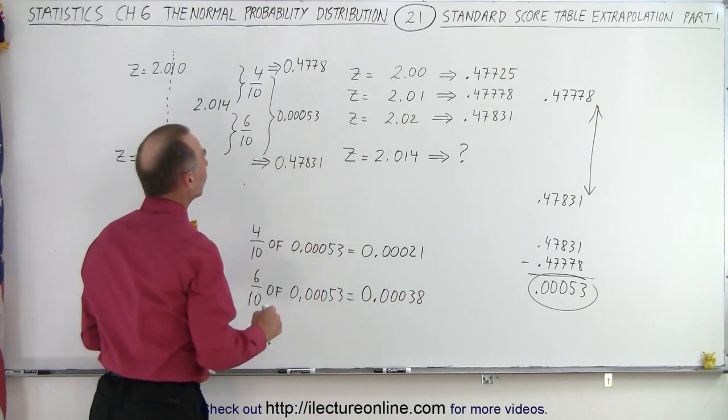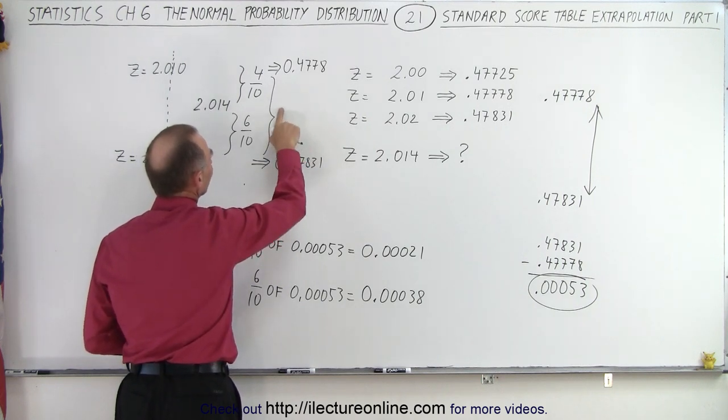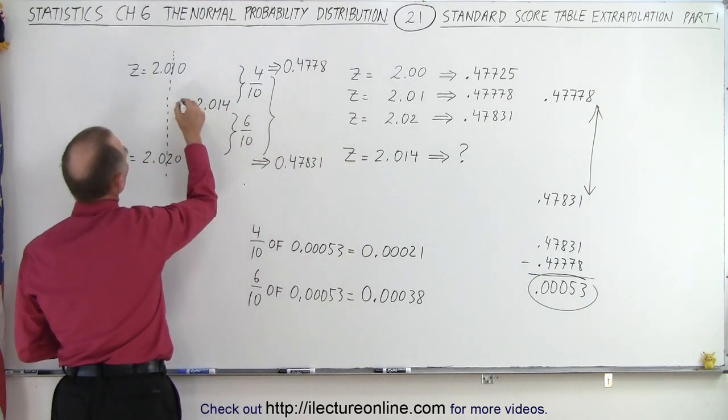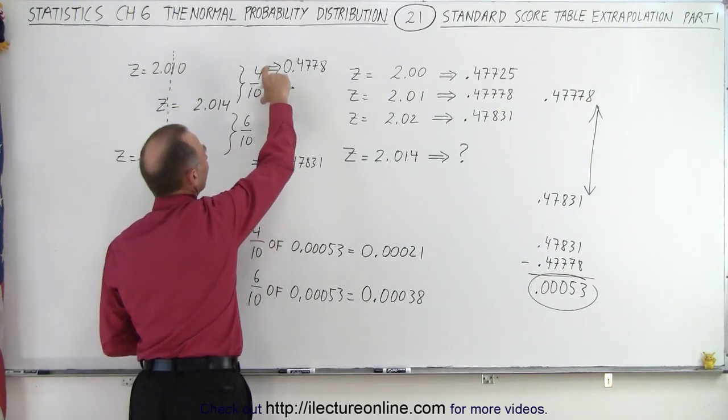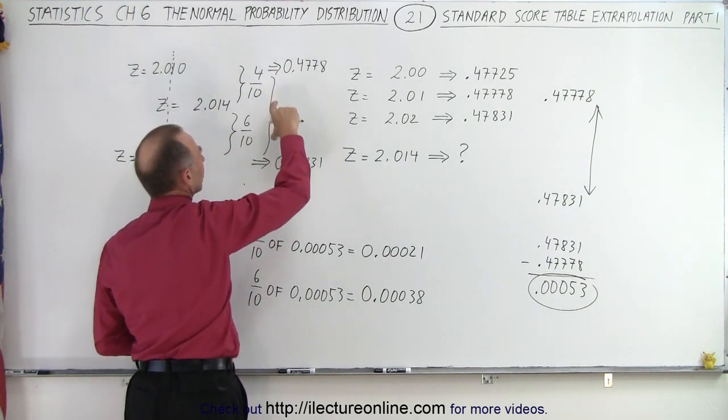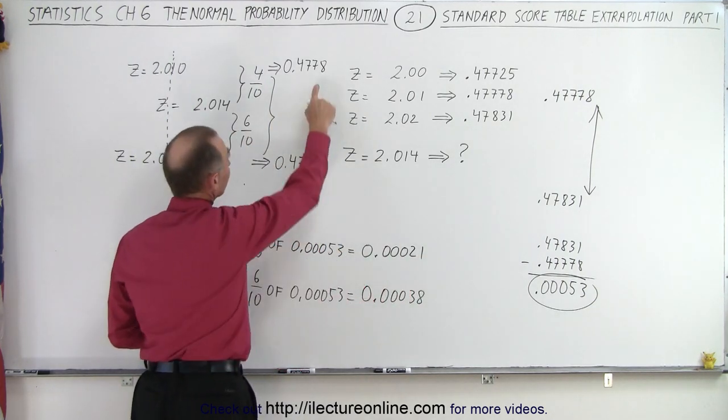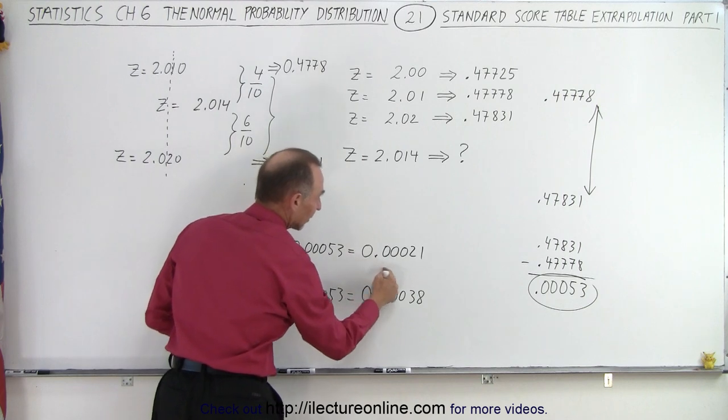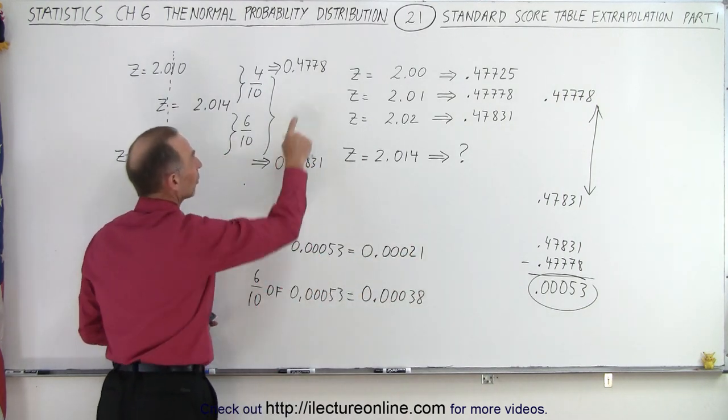So in order to go from here to here, and the difference is this much, I'm going to raise this now, the value now corresponding to a Z equals 2.014 must be 4 tenths of distance from there to here. 4 tenths of distance from this value to this value is if I add this number, which represents 4 tenths of the difference, to this.